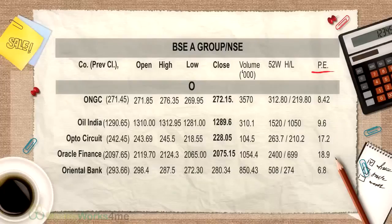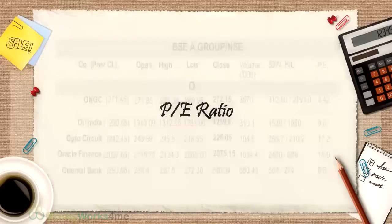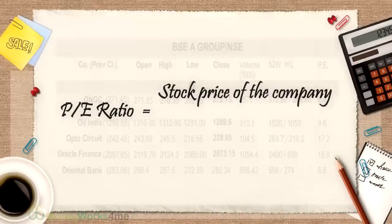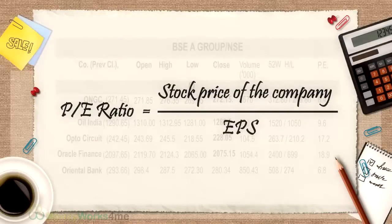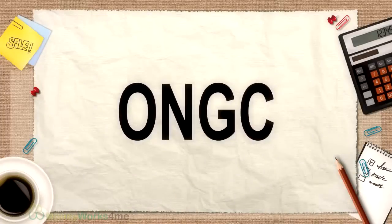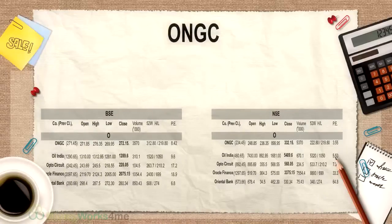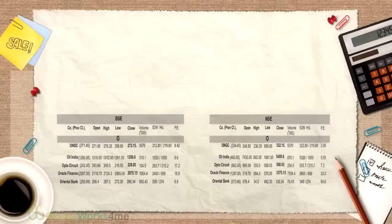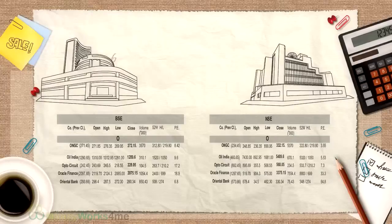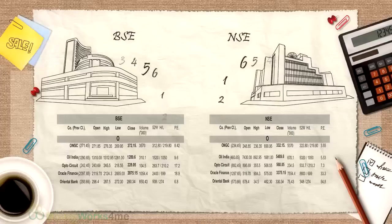The last column is the PE ratio, which in this case is 8.42. The PE ratio is the ratio of a company's stock price to its earnings per share, but more on this later. Sometimes, there may be two sets of data for the same stock. These two sets refer to the data received from the two main stock exchanges in the country, the BSE and the NSE.